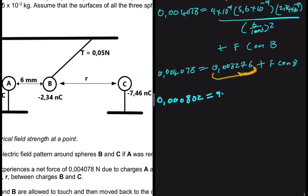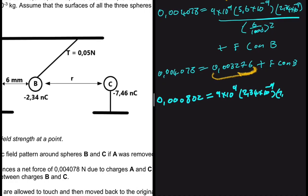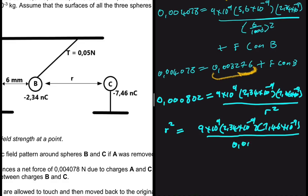Instead of F of C on B, now let's go ahead and substitute. So we're going to have K again which is 9 times 10 to the power 9 multiplied by B, the magnitude of B which is 2.34 times 10 to the minus 9, multiplied by the magnitude of C which is 7.46 times 10 to the minus 9, everything divided by r squared. If we do a bit of mathematical manipulation at this point, we're going to get r squared equals 9 times 10 to the power 9 multiplied by 2.34 times 10 to the minus 9 multiplied by 7.46 times 10 to the minus 9 everything divided by 0.000802.